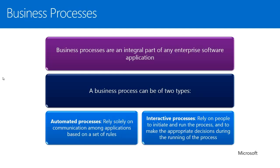Business processes are an important part of a solution. Being able to automate and control the flow of the process is key for user adoption and making sure the right information is getting into and being updated in the system. Dynamics CRM has two types of processes: automated processes based on actions or results of working in the system, and interactive processes initiated and run by the end user. Automated processes consist of workflow, custom workflow activities, and plugins. Interactive processes consist of dialogs.